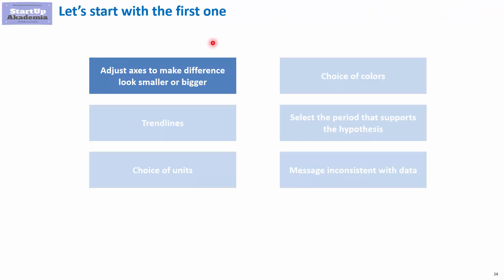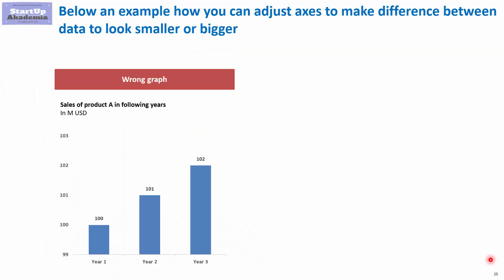The first method is to play with the axes. As you can see in this example, the difference between year 1 and year 3 looks extremely big. However, when you look at the axes, it is actually due to the fact that the axis starts from 99 and finishes at 103. Therefore, although 100 is very close to 102, the year 3 column looks almost three times bigger than the one in year 1.